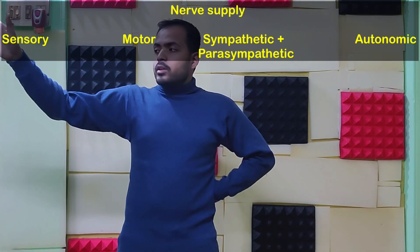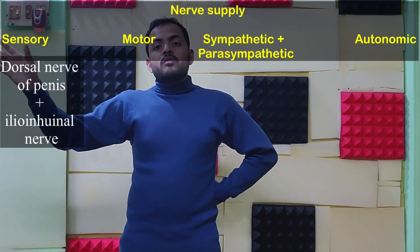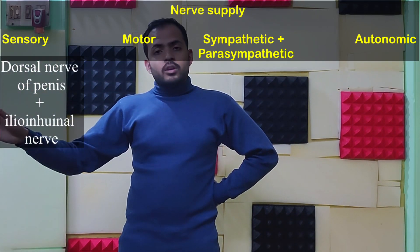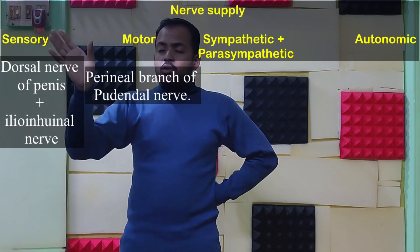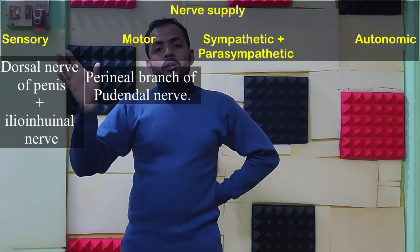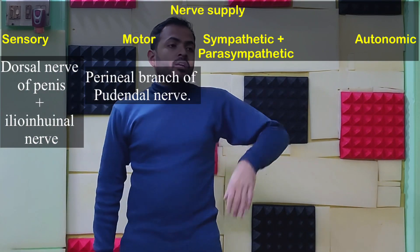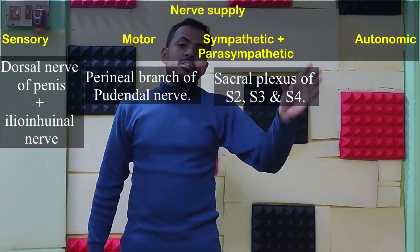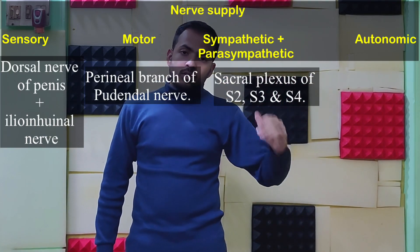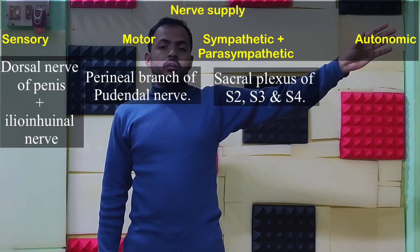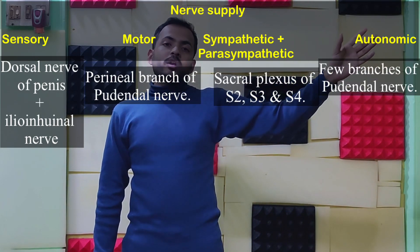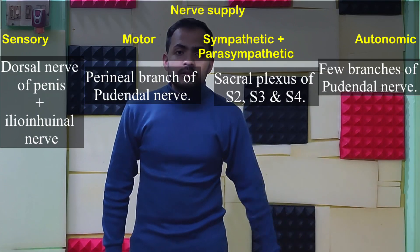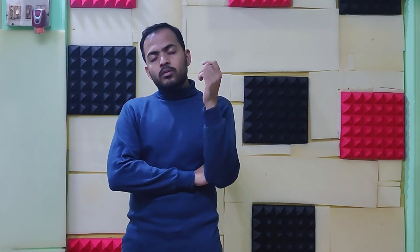For sensory supply, you get the dorsal nerve of the penis along with the ilioinguinal nerve. For motor supply, you get the perineal branch of the pudendal nerve. Sympathetic and parasympathetic combined are supplied by the sacral plexus of S2, S3, S4. The autonomic part is also supplied by a few branches of the pudendal nerve. So I hope you understood a little bit about this topic. In our next video I will start the female reproductive system. Till then, bye.